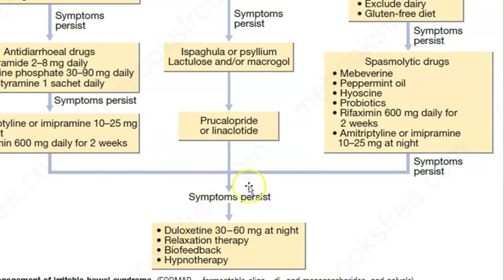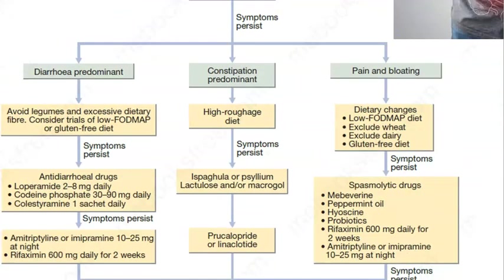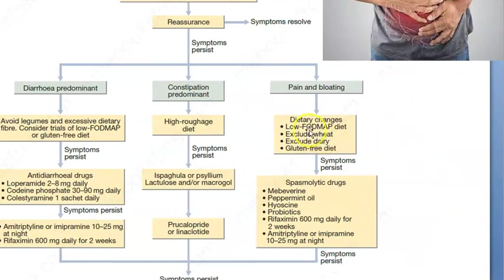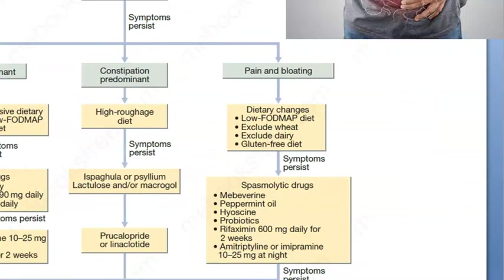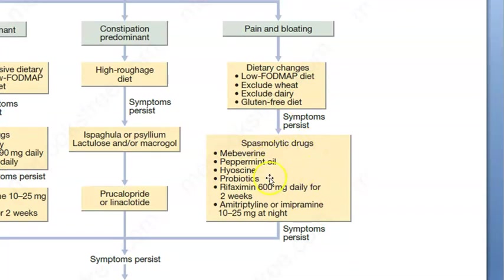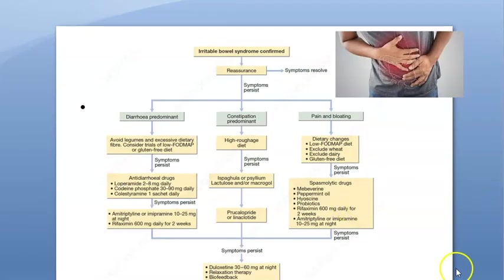If symptoms still persist — whether diarrhea, constipation, or both — consider biofeedback therapy, hypnotherapy, relaxation therapy, and duloxetine, which is an antidepressant. If the patient has predominantly pain and bloating rather than diarrhea or constipation, use a low-FODMAP diet, exclude wheat and dairy, and advise a gluten-free diet.